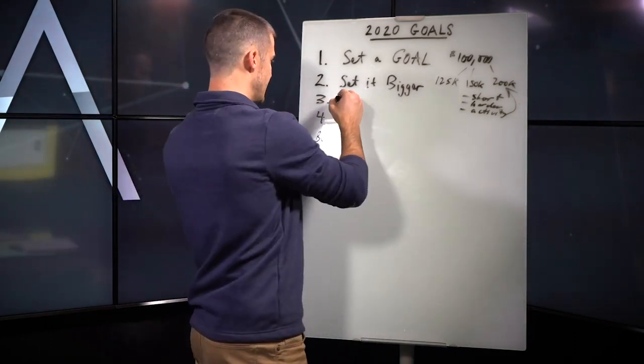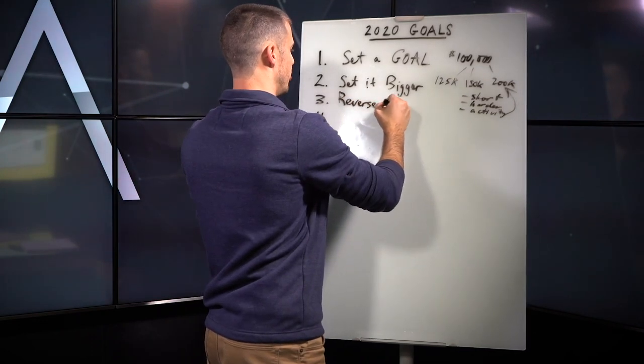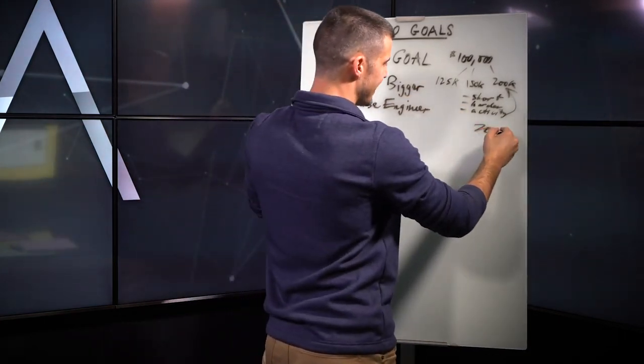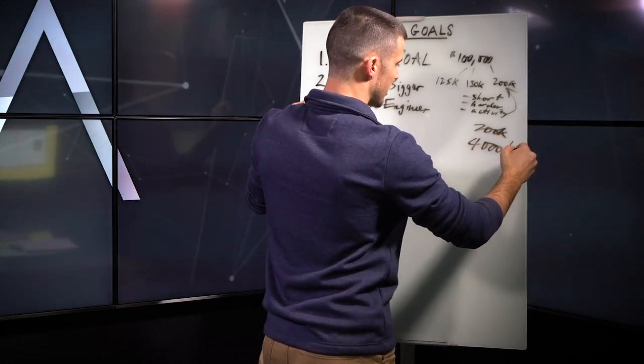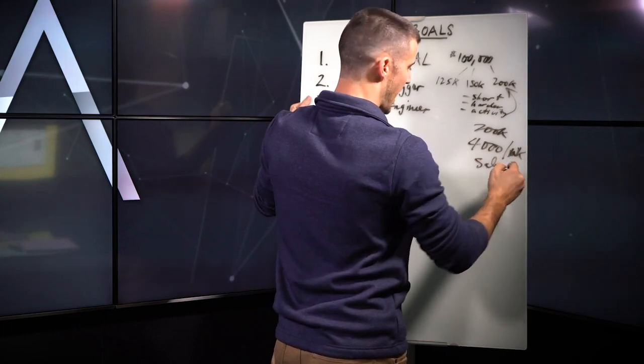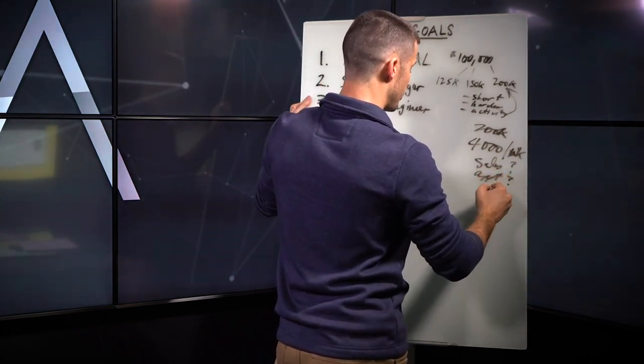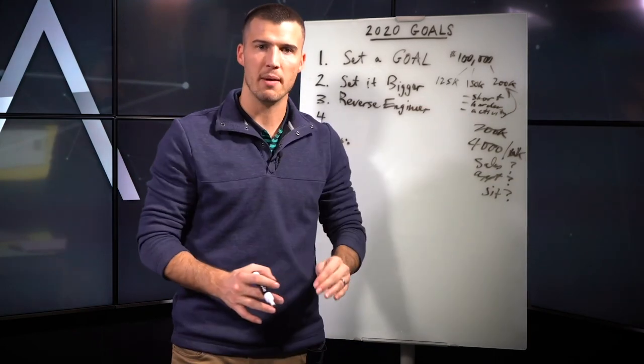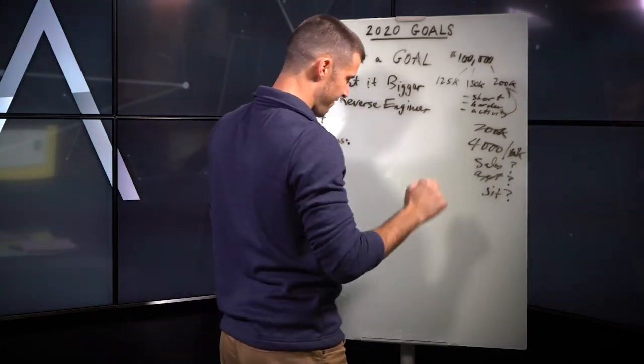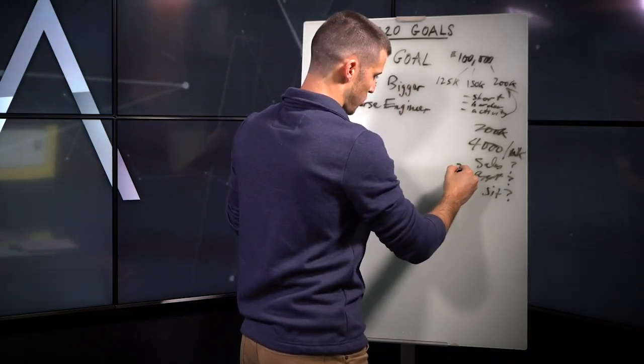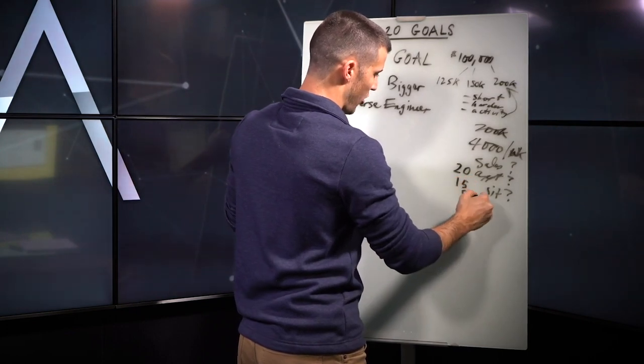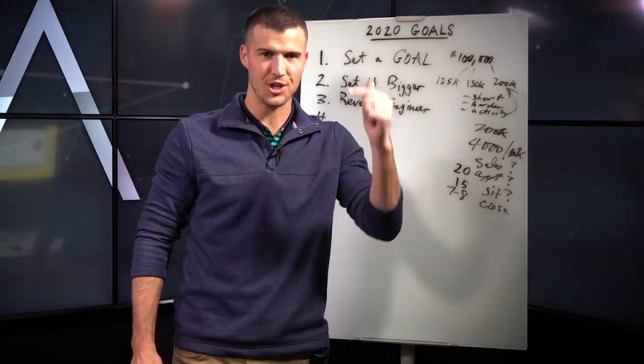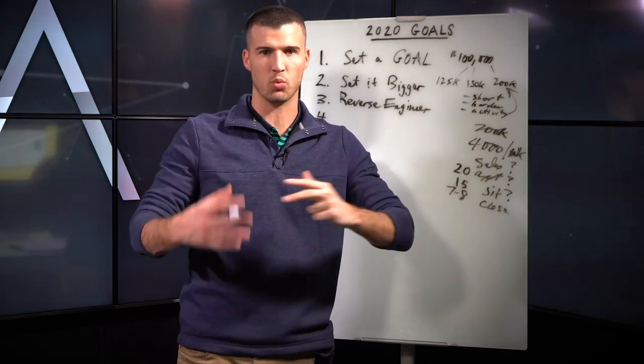After setting it bigger, I want you to reverse engineer what that looks like. What does that look like for you? If it was 200k, it's 4,000 per week. How many sales is that? How many appointments will that take? How many people you need to sit with? Like what does all of that look like for you to make sure that you know your numbers? You need to wake up and know, if I set 20 appointments and I sit with 15, I always close at least seven to eight. Well, if it's seven to eight, you're probably going to be at 4k a week. So reverse engineer this thing. Know what you need to do to make it a reality. It's one thing to say it. Talk is cheap.